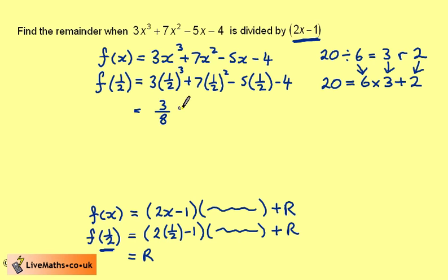But without a calculator, this would be 3 eighths and 7 quarters, take away 5 halves, take away 4, which is 3 eighths, add 14 eighths, take away 20 eighths, take away 32 eighths, and calculating this gives minus 35 eighths.